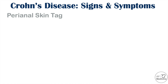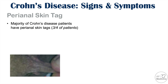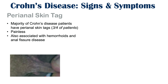Perianal skin tags are a very important sign of Crohn's disease. The majority of Crohn's disease patients — roughly 75% — have perianal skin tags. These are painless and are also associated with hemorrhoids and anal fissure disease. Having a perianal skin tag doesn't necessarily mean you have Crohn's disease, but a significant number of Crohn's disease patients have them.